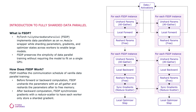FSDP implements data parallelism while sharding parameters, gradients, and optimizer states across workers to enable scaling of larger models. This preserves the simplicity of data parallel training without requiring the model to fit on a single GPU.